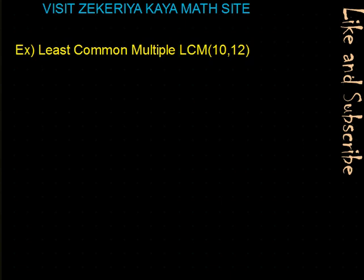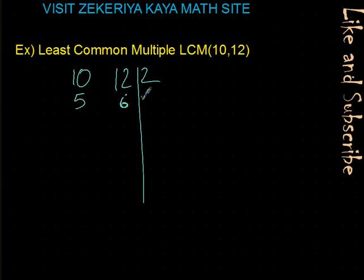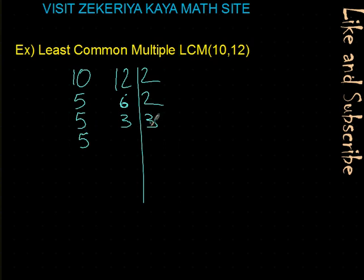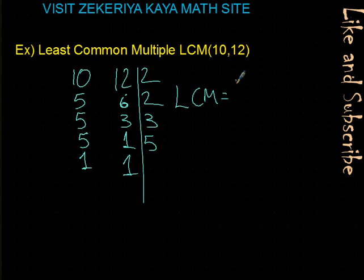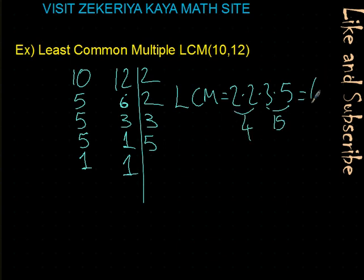Another example. You can pause and try. We start dividing by 2: 5 divided by 2 — we cannot, 12 divided by 2 is 6. Continue with 2: 5 — we cannot, 6 divided by 2 is 3. Now neither is divisible by 2, so we move to 3: 5 divided by 3 — we cannot, 3 divided by 3 is 1. Finish with 5: 5 divided by 5 is 1, 1 divided by 5 — we cannot. The least common multiple is 2 times 2 times 3 times 5, which equals 60.